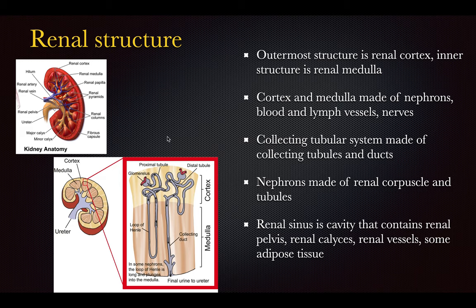The outermost structure is the cortex, and the inner structure is the renal medulla. The cortex and medulla are made out of nephrons along with blood vessels, lymphatics, and nerves. The collecting tubular system is made out of collecting ducts and tubules. The nephron is made out of the renal corpuscle, which includes vasculature and tubules. The renal sinus is the cavity containing the renal pelvis, calices, vessels, and some fat.